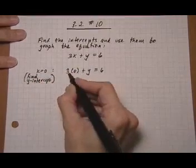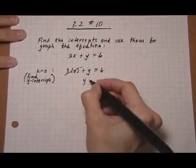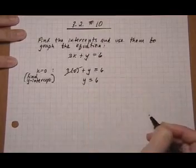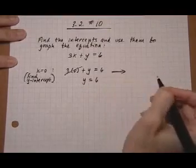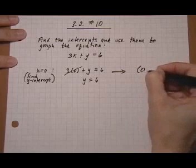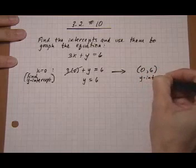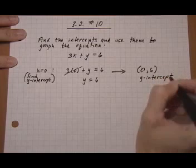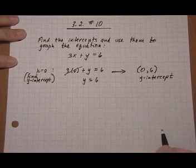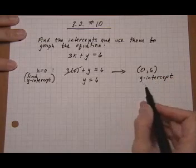Three times zero is zero, so I can just get rid of that. y equals 6. So that tells me that x is 0, y is 6 is the y-intercept, or that's where our line is going to cross the y-axis or intercept the y-axis.